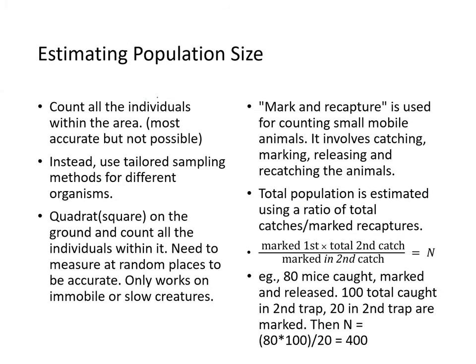How do you estimate population size? If the area is small enough, you could count all individuals — that's the most accurate way, but it's not always possible. Instead, tailored sampling methods are used. One example is a quadrat, basically a grid or square on the ground where you count individuals within it, repeated at random places. It only works on immobile or slow-moving creatures.